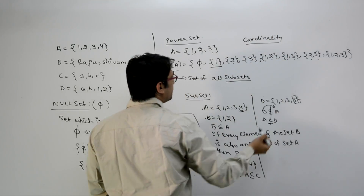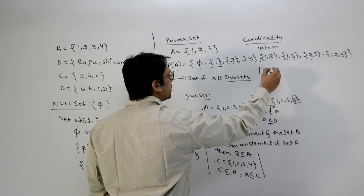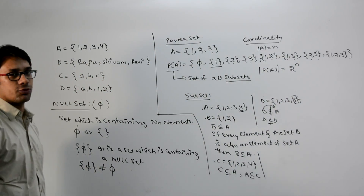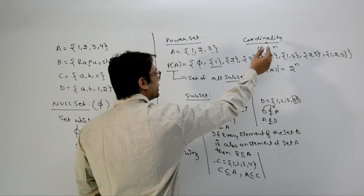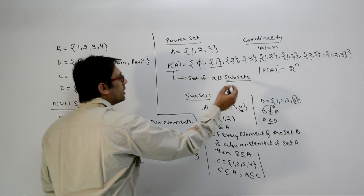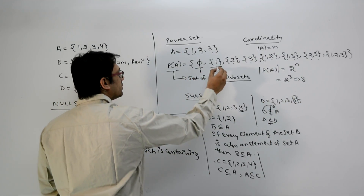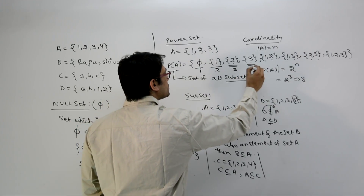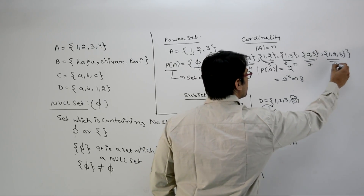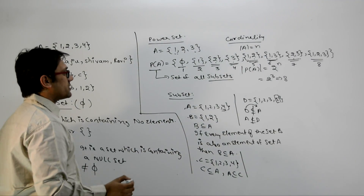The cardinality of a set means the number of elements. If the cardinality of set A is n, then the cardinality of the power set of A is 2 raised to the power n. Since set A has 3 elements, the power set contains 2³ = 8 elements, which we can count: 1, 2, 3, 4, 5, 6, 7, 8.